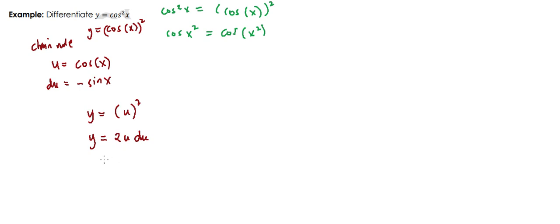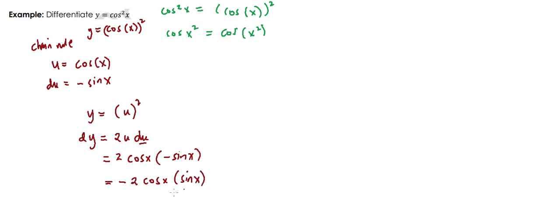Now substituting back since we know u is cosine x and du is negative sine x, we get 2 times cosine x times negative sine x. Writing this in standard form, our answer is negative 2 cosine x sine x.